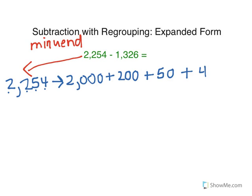Now I'm going to expand out our second number, which is called the subtrahend. So I'm going to write 1,326. And again this is the subtrahend.